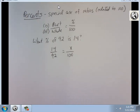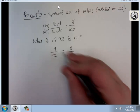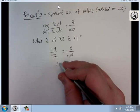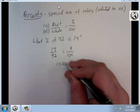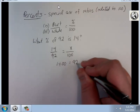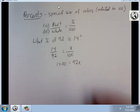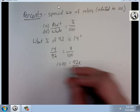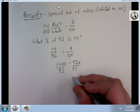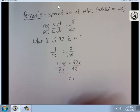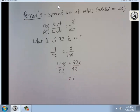Now it's cross-multiplying just like before. I get 1400 equals 92x. Divide each side by 92, and I get 1400 divided by 92, which is 15.22.